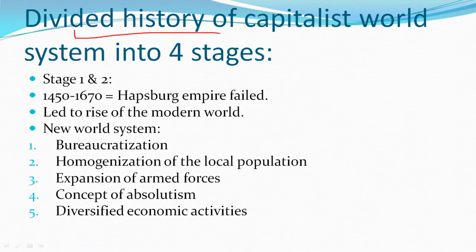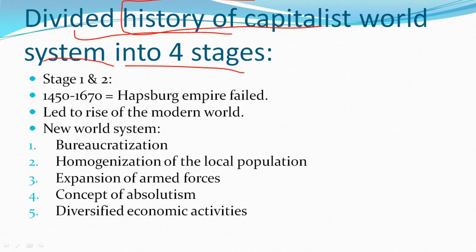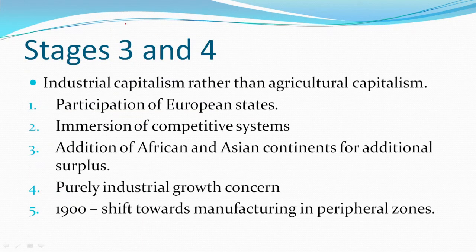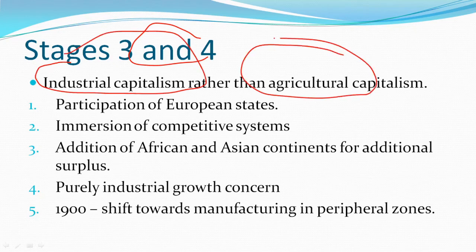The history of the capitalist world system is divided into four stages. Stages one and two saw the rise of the modern world, which included ideas like bureaucratization, homogenization of local populations, expansion of armed forces, the concept of absolutism, and diversified economic activities. Stages three and four emphasize industrial capitalism rather than agricultural capitalism, seen most prominently in how European states actively participated in discovering new regions for exploiting new markets.